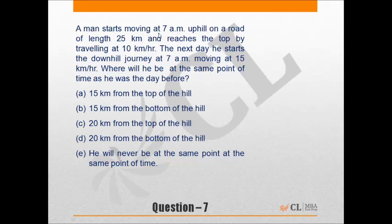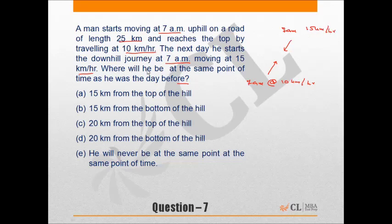Question 7: A man starts moving uphill at 7 AM on a road of 25 kilometers at 10 km/h. The next day he starts the downhill journey at 7 AM at 15 km/h. Where will he be at the same point of time as the day before? We can reframe this: one person goes uphill at 10 km/h and another comes downhill at 15 km/h, both starting at 7 AM. The question becomes: where do they meet?